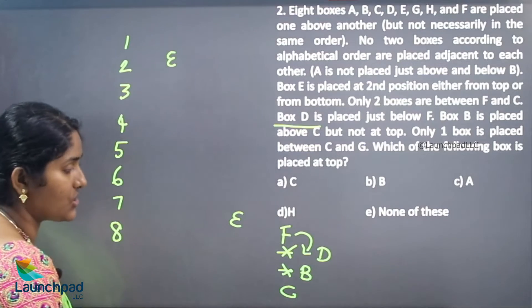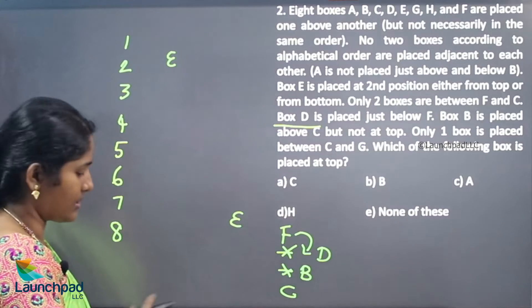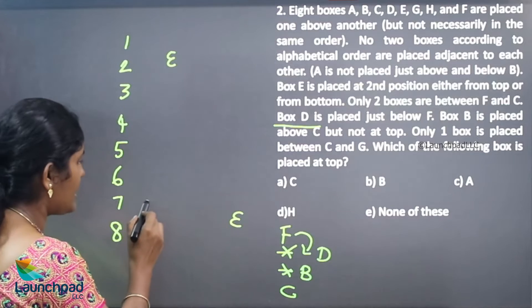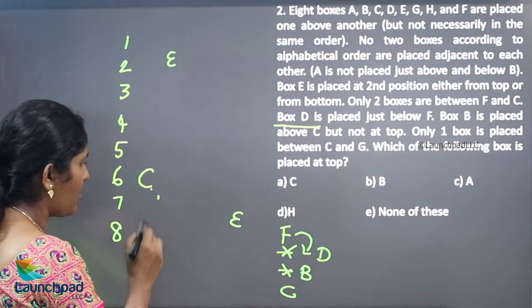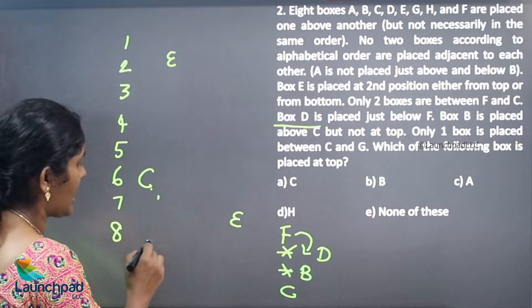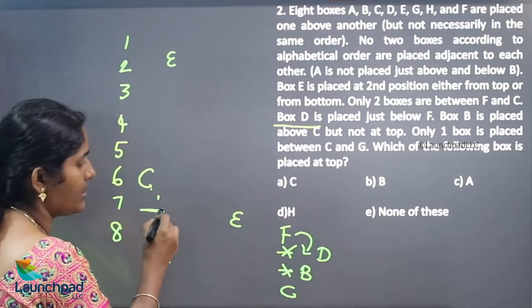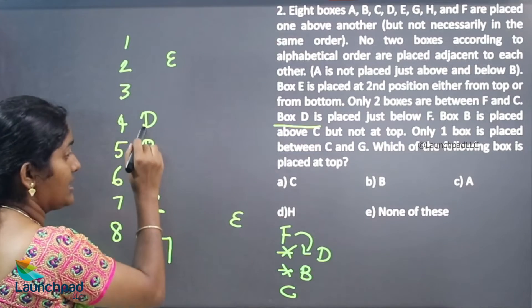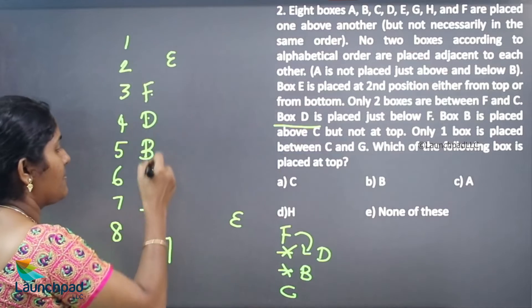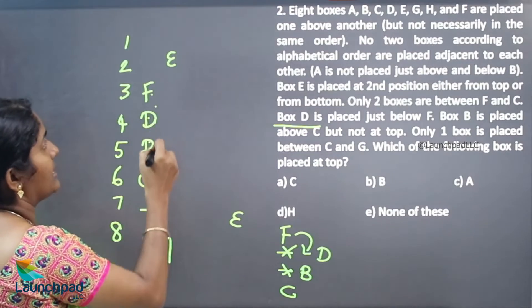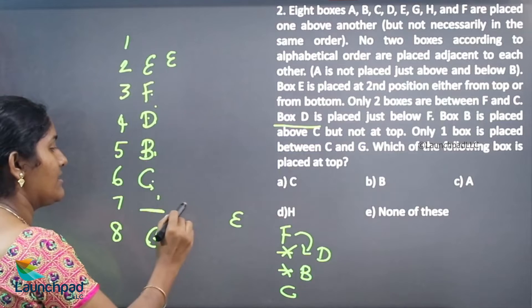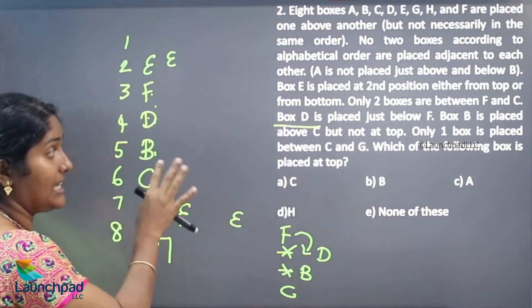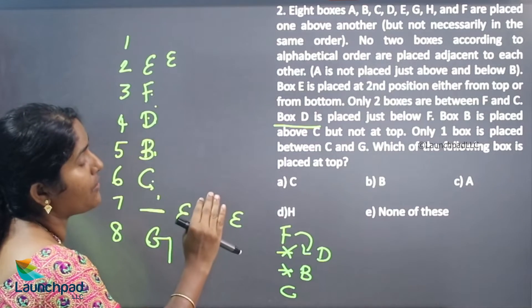C and G — I need to place only 1 box between them. If I am placing C here, only 1 box is placed between C and G, so G is here. The above C is B, and above B is D. F and C have 2 boxes between them. E is at the 2nd position, or E will be coming here. Only 1 box is placed between C and G.